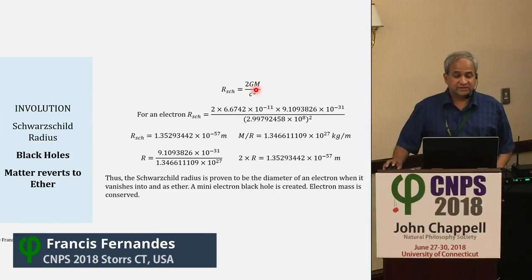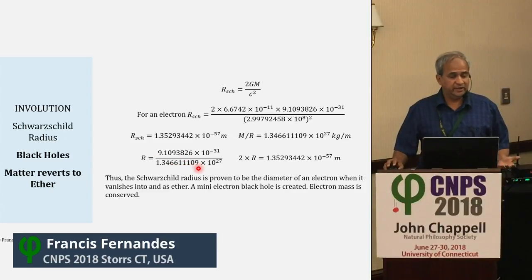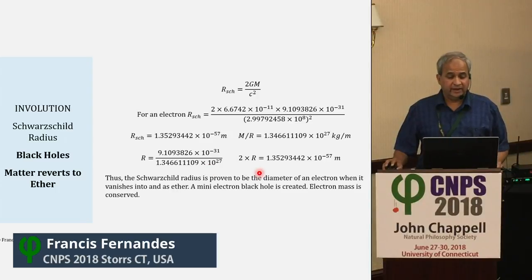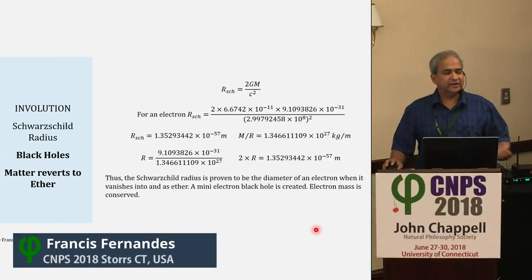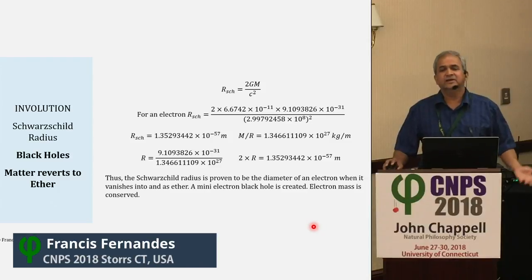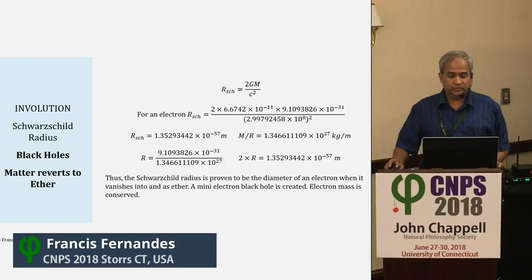For black holes, this is Schwarzschild's radius: 2GM by C squared. Taking the electron as a test particle with the ether constant ratio of ether masses per radial meter, I get the Schwarzschild radius for a black hole. I've shown matter — in this case an electron — turns back to ether. That is the reason for the involution of matter to ether and the evolution of ether to matter.